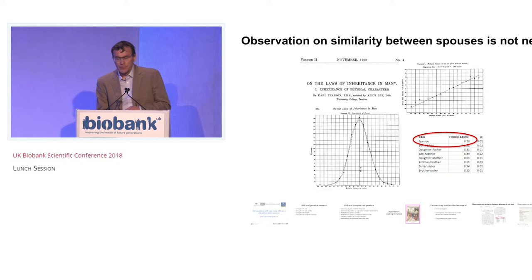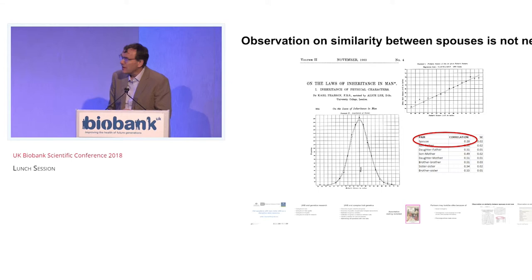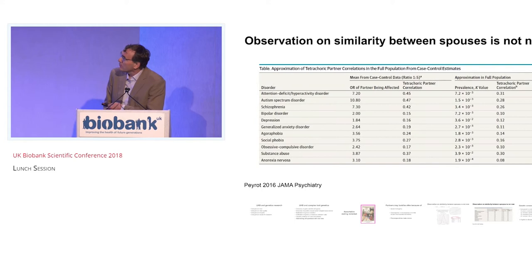It's not just for non-medical traits like human height that we can observe spousal similarity. Here's an example for psychiatric disorders, looking at the odds ratio of spouses of probands across a range of psychiatric disorders, and you can see there's a clear elevation and increased risk. These are just observations in the population.